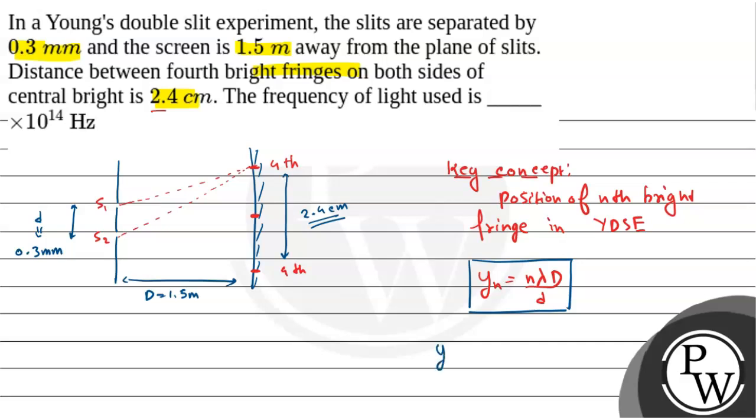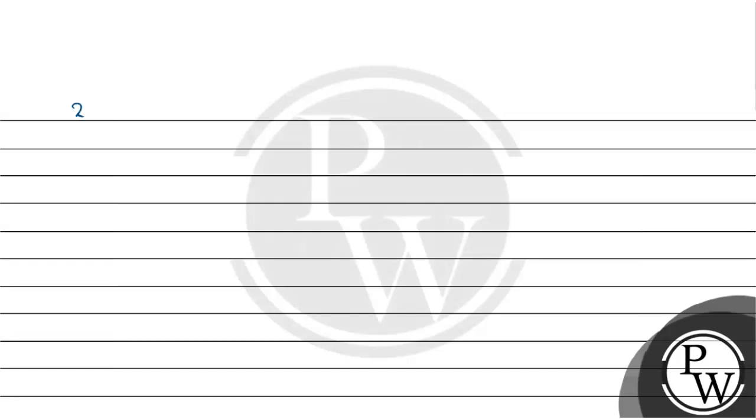Now, for 4th bright fringes, that is y4 is equal to 4 lambda D by d. Now, according to the question, the question mein bola hai hai ki, 2 into y4 is equal to 2.4 cm, that is 10 to the power minus 2.